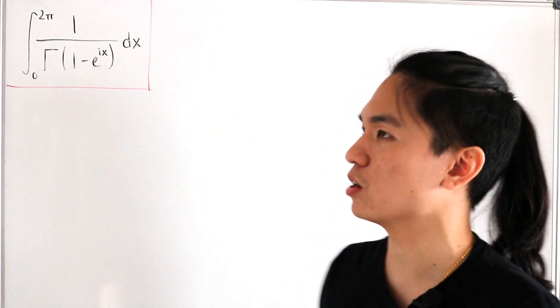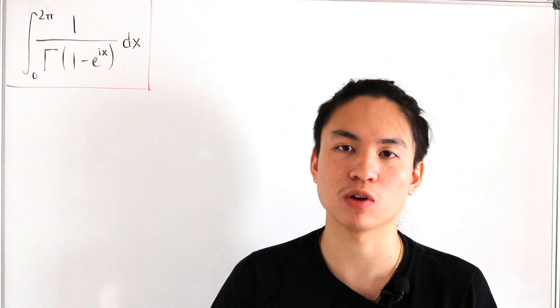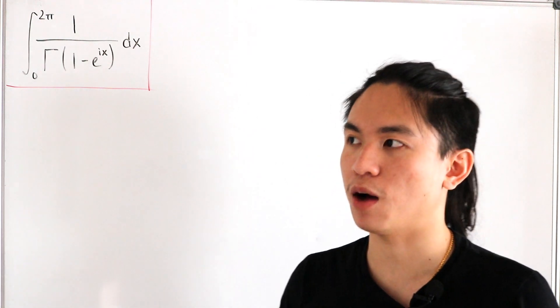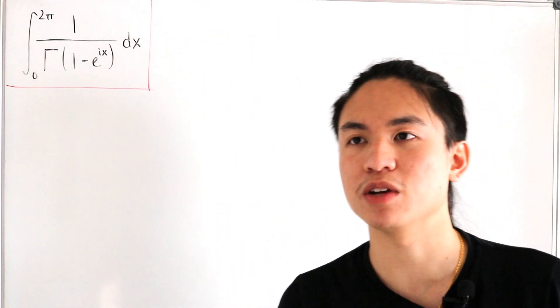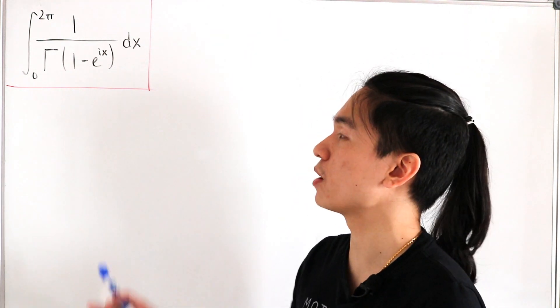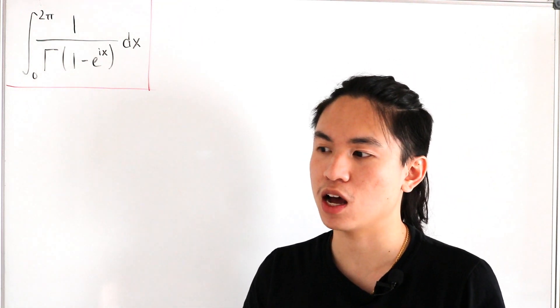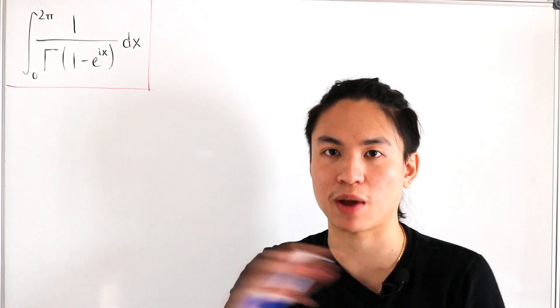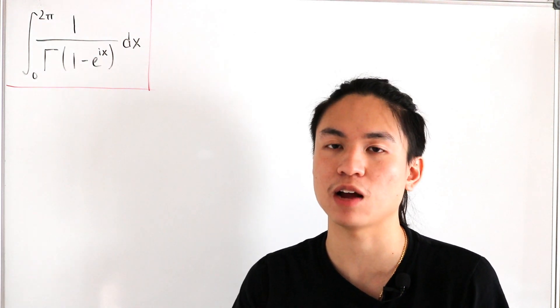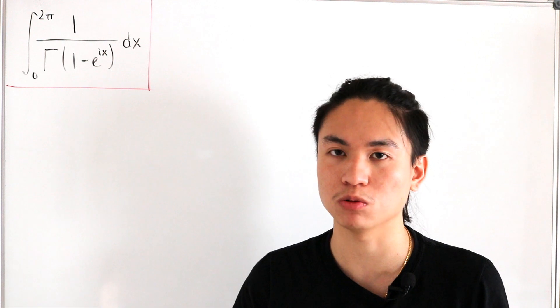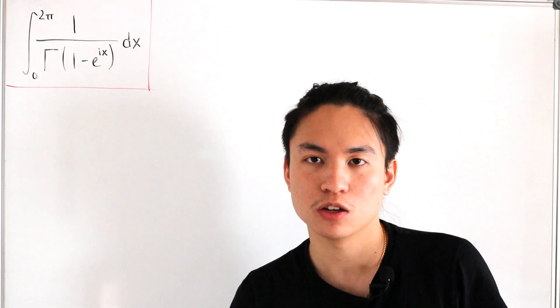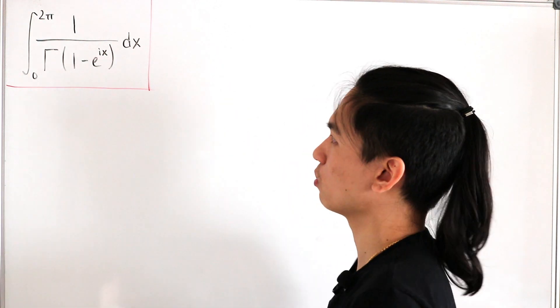So even if we have contour integrals from here, that would also mean that we can actually apply the residue theorem. Residue theorem is basically, depending on what your denominator is, if you have some value that creates a pole and it's within the path of the contour, then you can actually evaluate that residue there in order to evaluate the integral itself. Using from that, that's what basically we're going to do from here.